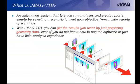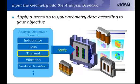JMAG VTB, or Virtual Test Bench, is an automation system that lets you run analyses and create reports simply by selecting a scenario from a wide variety of scenarios. With JMAG VTB, you can get the results you want just by preparing the geometry data, even if you don't know how to use the software or have little analysis experience. Starting with the motor geometry and defining component names and sets, instead of applying a single analysis condition, you apply an analysis scenario — for example, running a thermal study on a transformer by setting up the load analysis and feeding those losses into a thermal analysis. It's not just a single analysis; it runs a template based on numerous analysis steps.